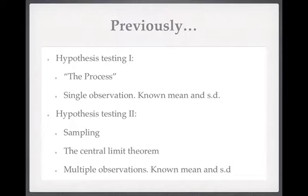Last time in hypothesis testing 2 we had an introduction to sampling and a brief run through the central limit theorem, and then we looked at a specific example where this time we had multiple observations and under the null hypothesis the population had a known mean and a known standard deviation.